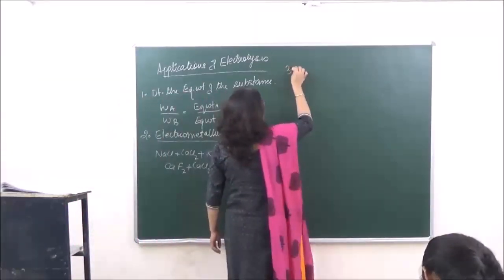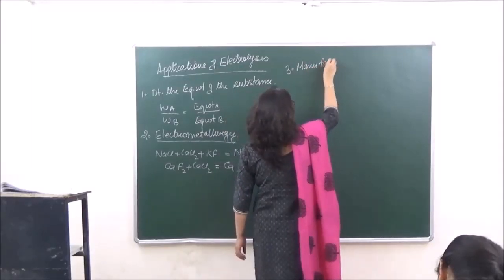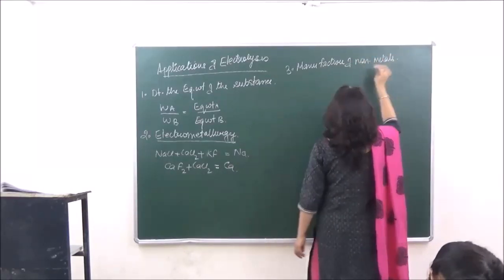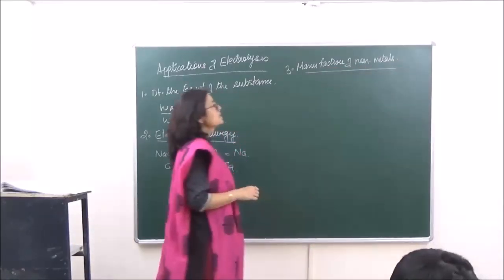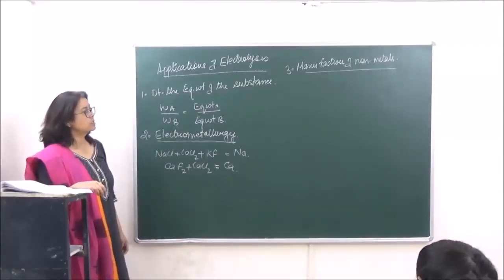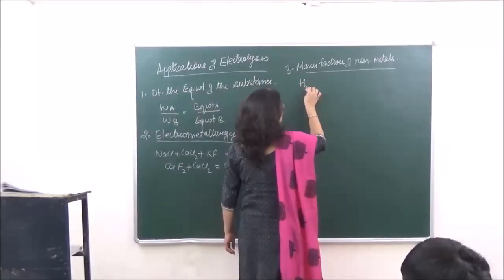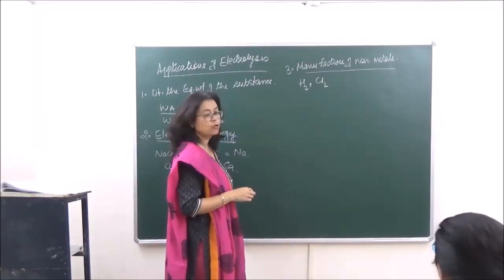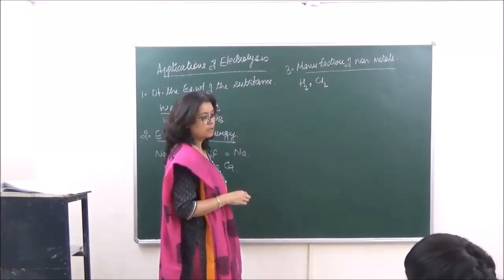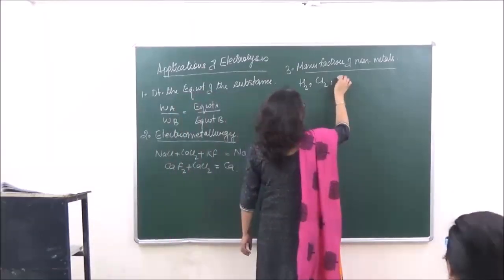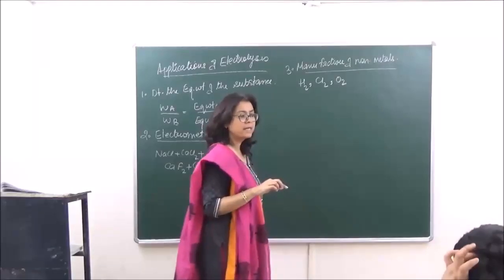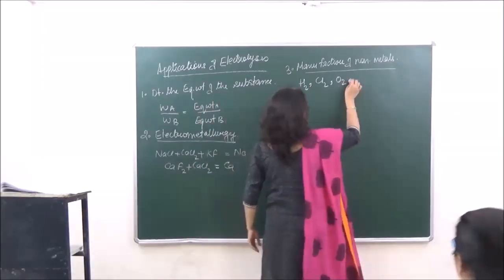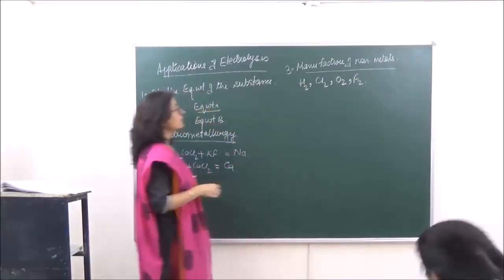The third application is manufacture of non-metals. Many gases are liberated at the anode during electrolysis. For example, with aqueous NaOH, hydrogen is liberated at the cathode, and chlorine is liberated at the anode. Non-metals mostly are liberated at the anode — the exception is hydrogen. Oxygen and chlorine are both liberated this way.